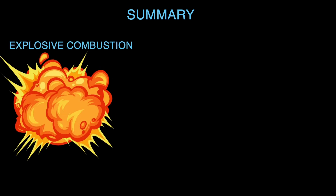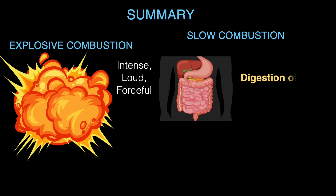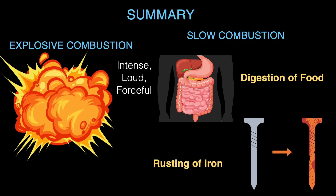To summarize: explosive combustion is very dramatic — an intense, loud, and forceful reaction releasing a large amount of light, heat, and sound. The stark opposite is slow combustion, where there is almost no visible observation of the reaction. Digestion of food and rusting of iron are examples of slow combustion, which takes place very slowly and releases heat in a flameless manner.